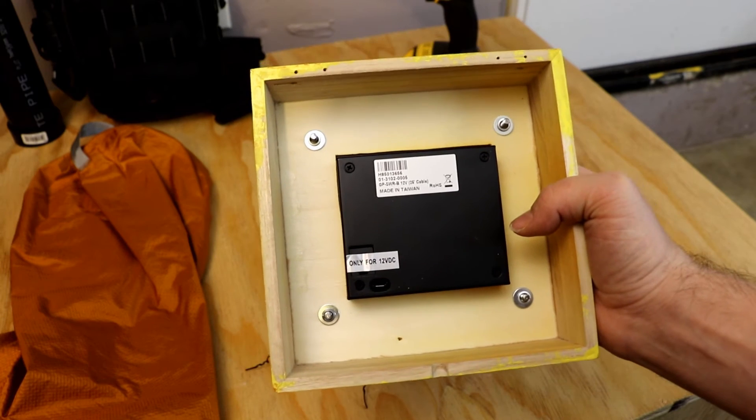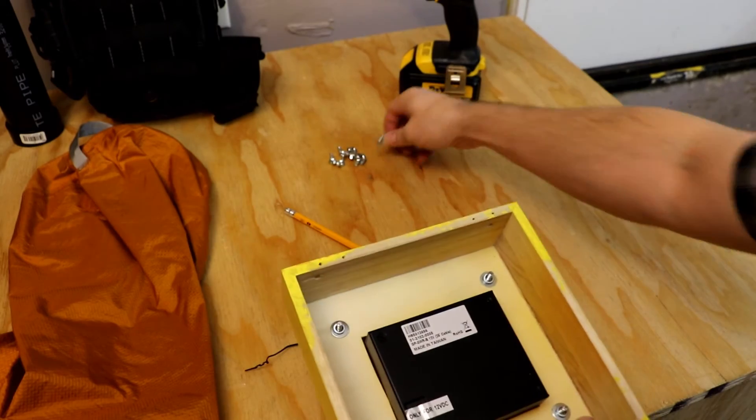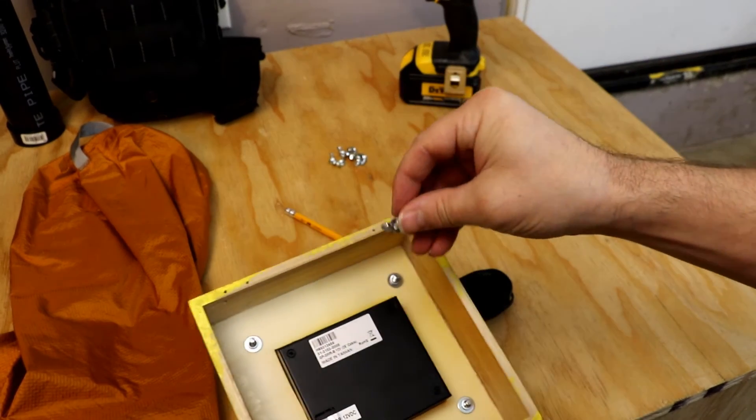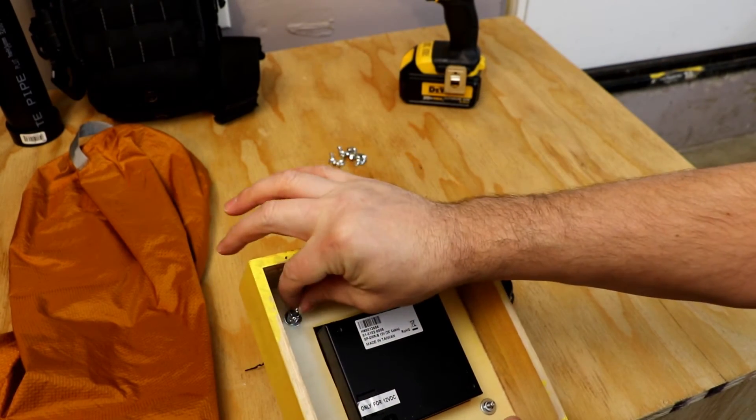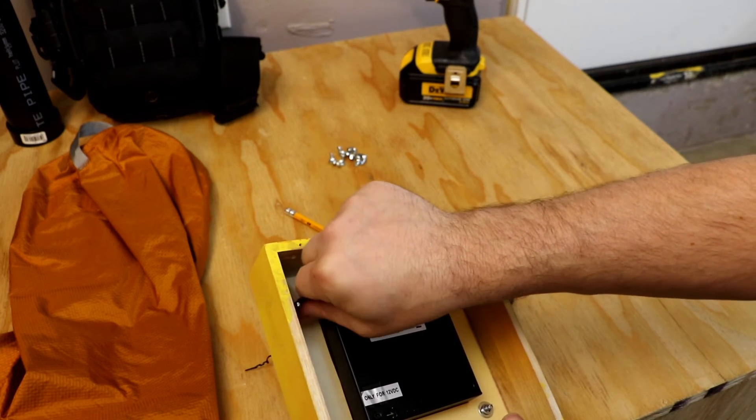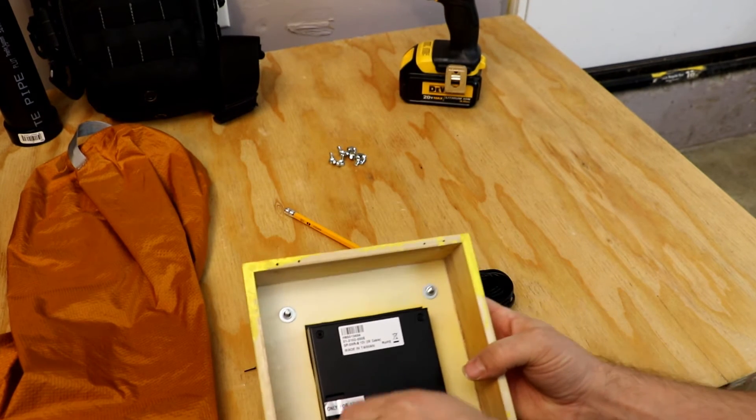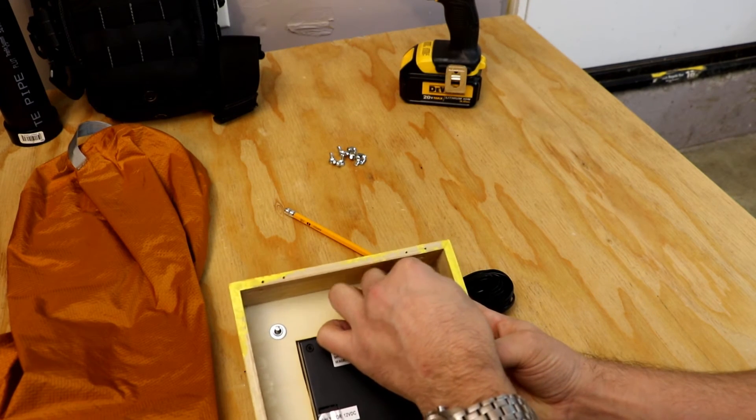All right, so I just got the unit mounted in there. I'm getting ready to go ahead and put the... I'm going to use these little wing nut washers on there. And I'll show you specifically why. And it will help out with the space in the back of the unit here.